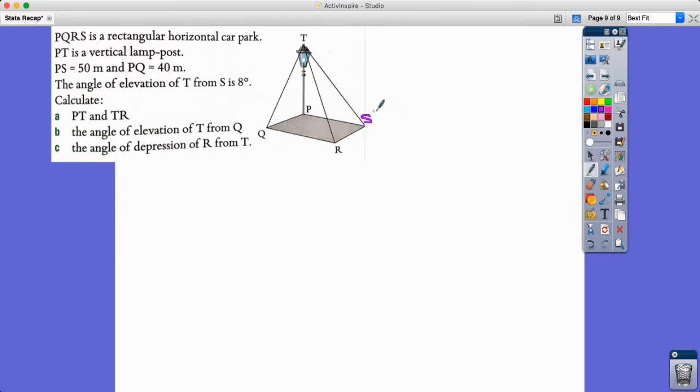PT is a vertical lamppost. PS is 50 meters, so let's put some of these things in. We've got 50 meters here and PQ is 40 meters.